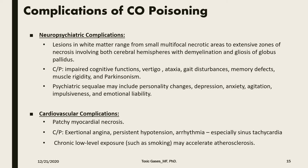If we speak about complications of carbon monoxide poisoning, we will divide them into neuropsychiatric complications. These follow lesions in the white matter in the form of small multifocal necrotic areas or extending to extensive zones of necrosis involving both cerebral hemispheres, with damaging of the myelin sheaths and gliosis of the globus pallidus. This is manifested as impaired cognitive functions, impaired gait, vertigo, memory defects that might last forever, muscle rigidity, and the development of Parkinson's disease. The patient may also develop psychiatric sequelae manifested as personality changes, depression, anxiety, agitation, impulsiveness, and sometimes mood disorders.